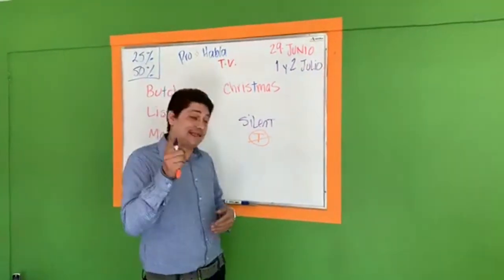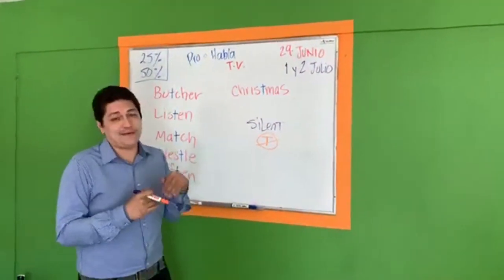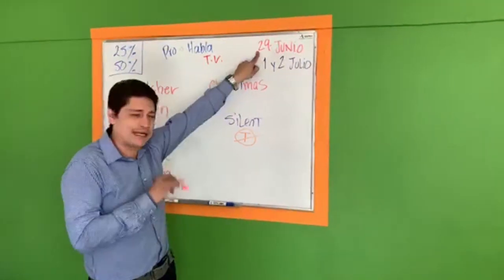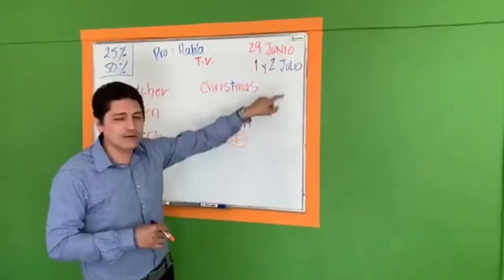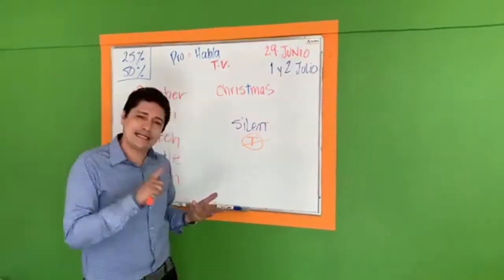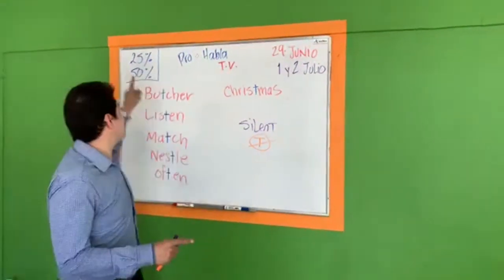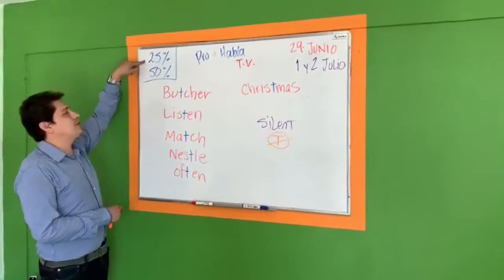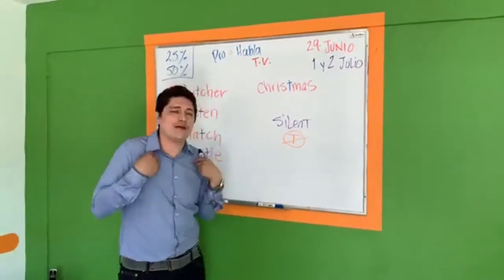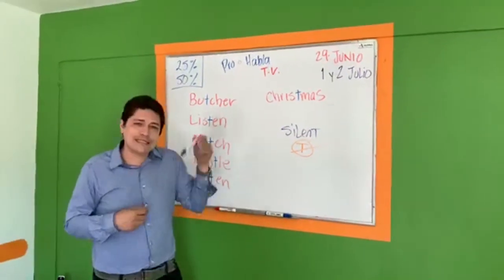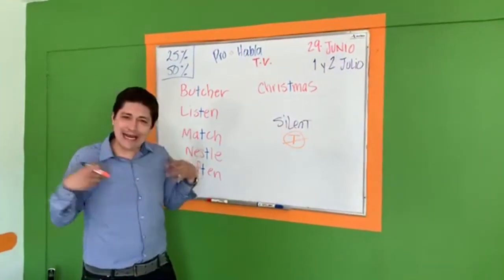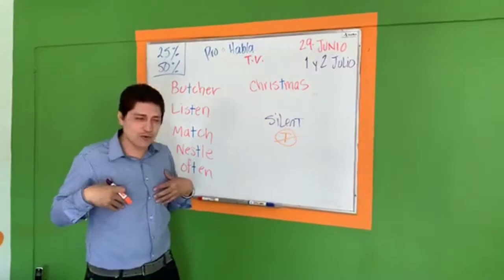And if you want to take classes, si a ti te interesa tomar clases o quieres llevar tu inglés más allá, bueno, iniciamos 29 de junio, este sabatino, en la mañana y la tarde, el primero y el dos de julio. Iniciamos entre semana a las nueve de la mañana, cinco de la tarde, siete de la noche. Ahorita, 25% descuento en tu primera mensualidad, 50% de descuento en tu inscripción. Y a toda la gente que venga al curso presencial, se le va a regalar una playera Pro Habla, una playera negra con letras blancas y naranjas, muy, muy padre.